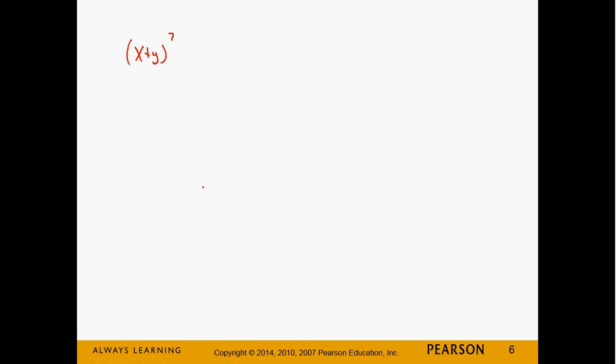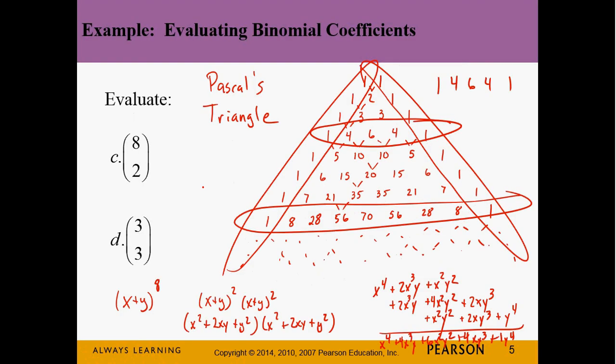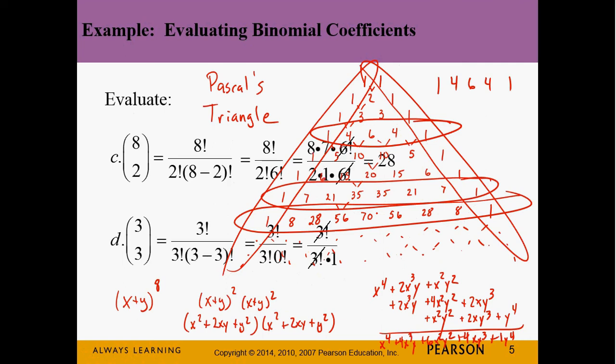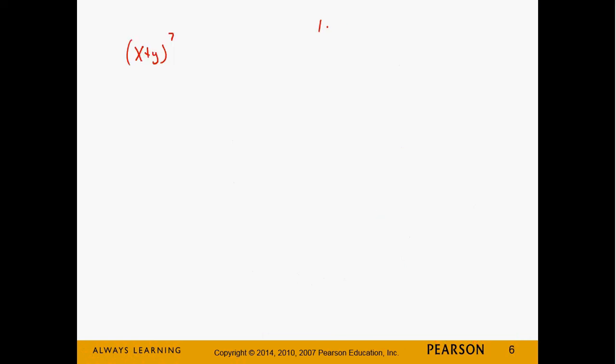Find (x + y)⁷. From the seventh row of Pascal's Triangle I know the coefficients are 1, 7, 21, 35, 35, 21, 7, 1 — eight total coefficients. X starts at x⁷ and decreases by one each term, while y starts at y⁰ and increases by one each term.